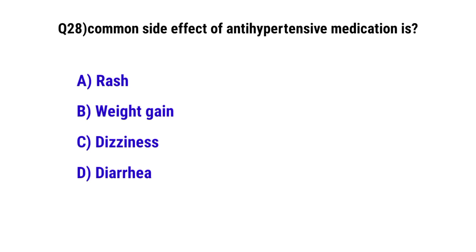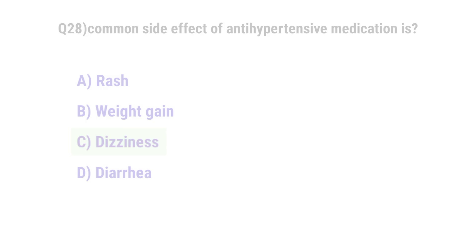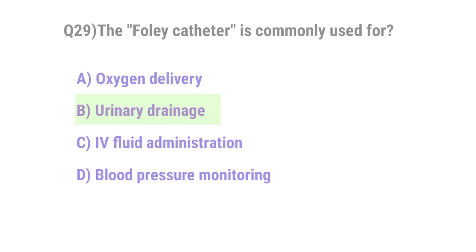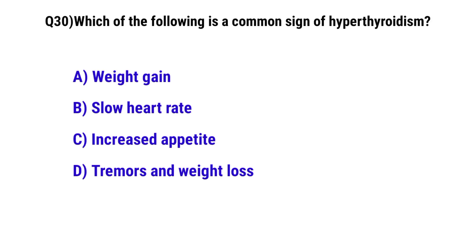Question No. 28: A common side effect of antihypertensive medication is — the correct option is C: dizziness. Question No. 29: The Foley catheter is commonly used for — the correct option is B: urinary drainage.